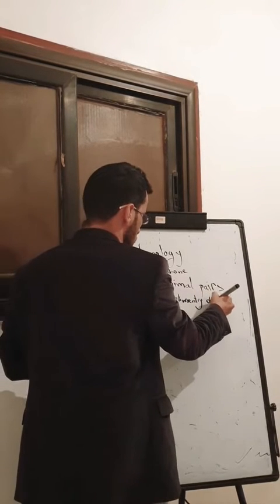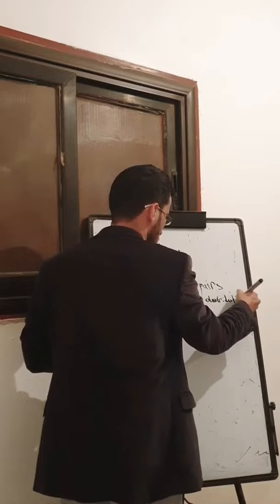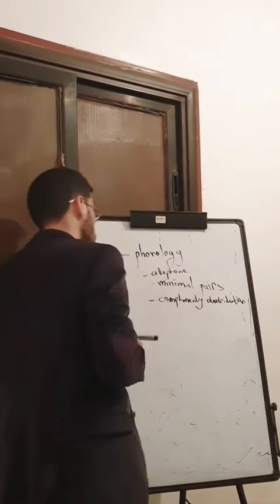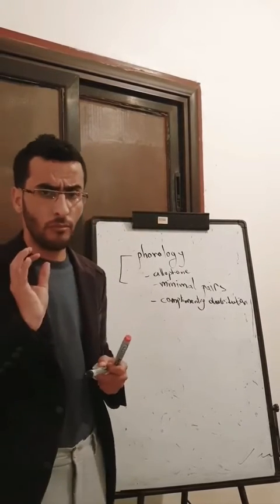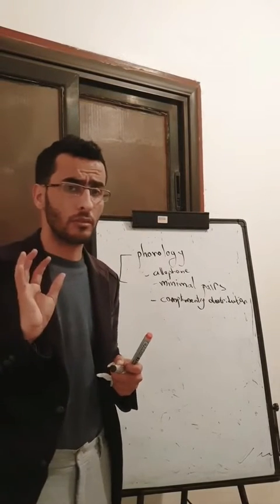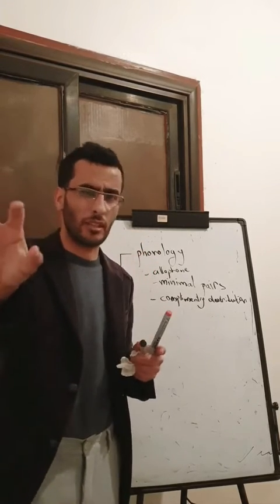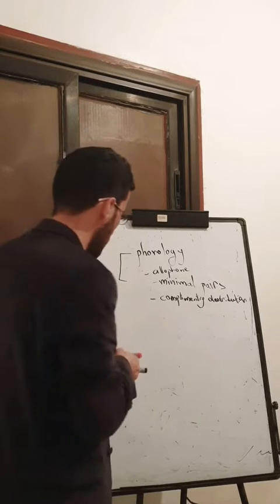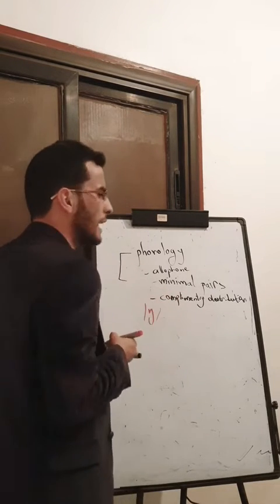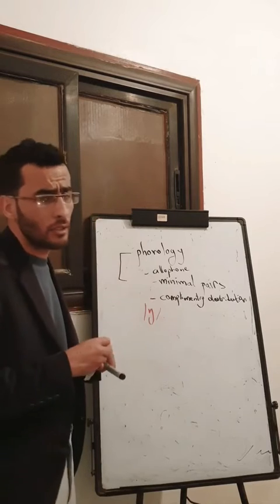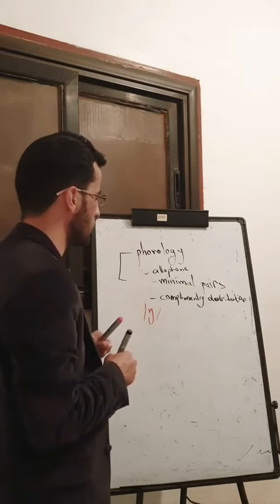Complementary Distribution. What's the meaning of Complementary Distribution? It means that the phoneme cannot stay in a specific position. For example, this phoneme in English cannot be an initial — no way. So it is in Complementary Distribution.